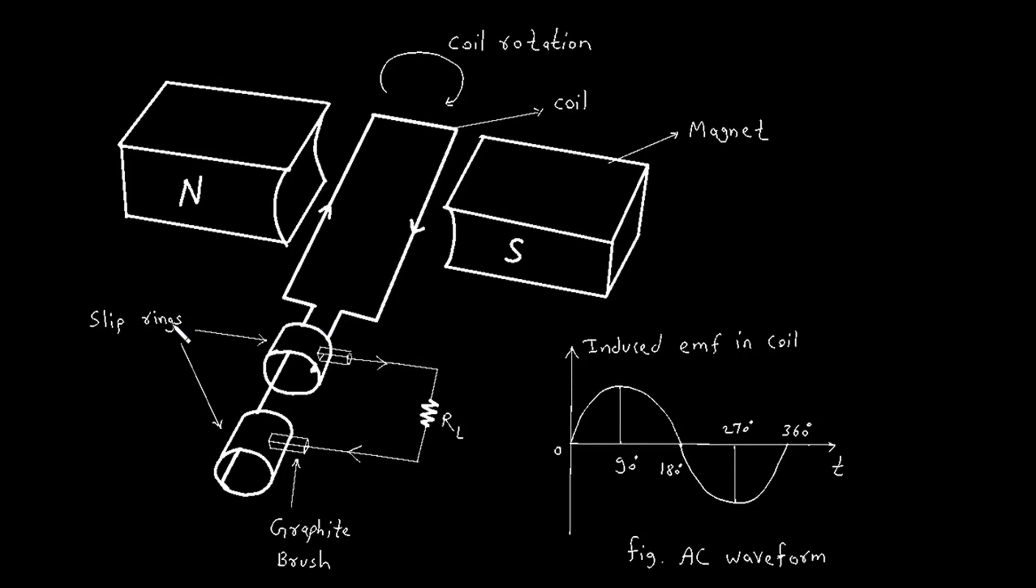Third, slip rings. These are metal rings connected to the ends of the coil. They rotate with the coil.